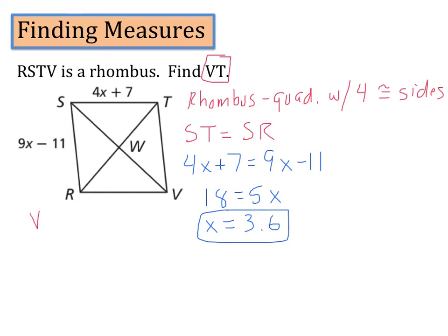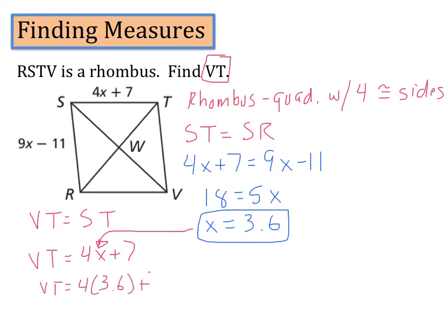Now we want to find VT. Since all sides of a rhombus are congruent, VT equals ST, which is 4x plus 7. Plugging in x equals 3.6: VT equals 4 times 3.6 plus 7, which gives us 21.4. So 21.4 is not only the length of VT but the length of every side of this rhombus, since all sides are congruent.